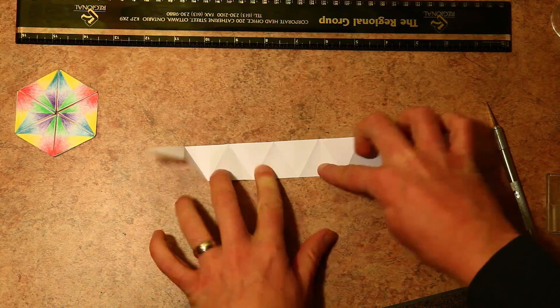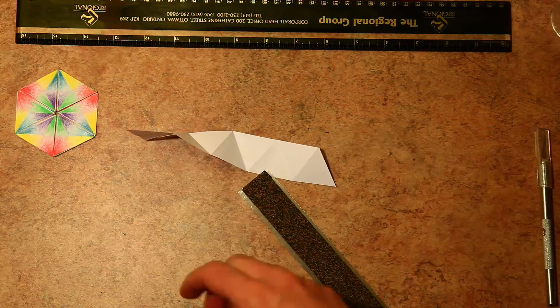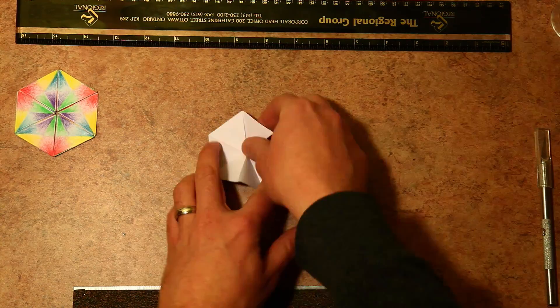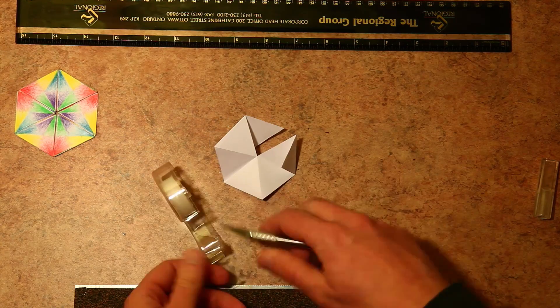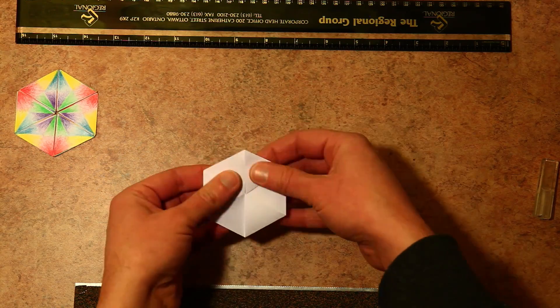And folding a trihexaflexagon is pretty simple. You just start folding up every second fold until you get a hexagon, and then join the two rough sides with tape.